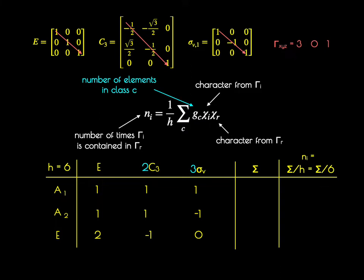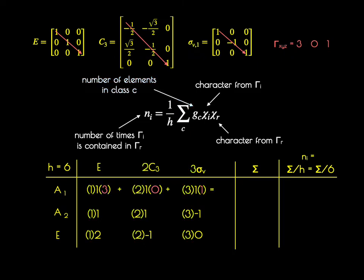It's easiest to make a table. Expanding the table by carrying through the number of elements in each class, we go through the A1 representation by taking the characters from the reducible representation and carrying out the arithmetic. We get a sum of 6; 6 divided by 6 equals 1. So the A1 irreducible representation appears once in our reducible representation. Going through for A2, we come up with a sum of 0, meaning the A2 irreducible representation is not contained in the reducible XYZ representation.